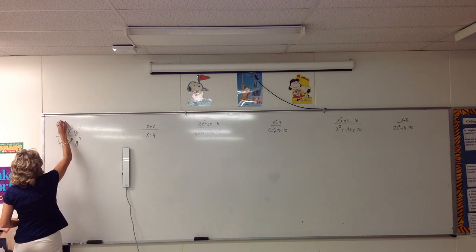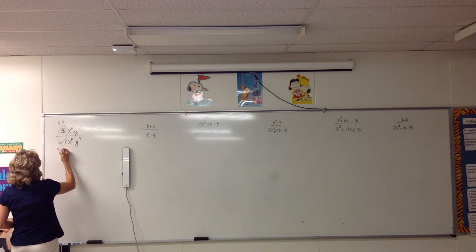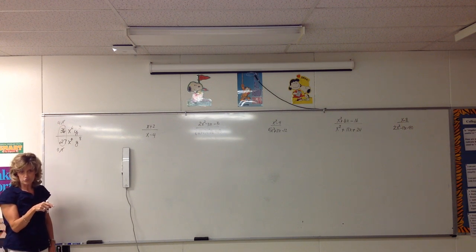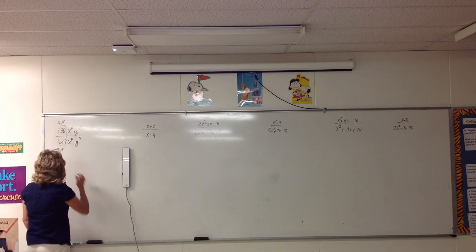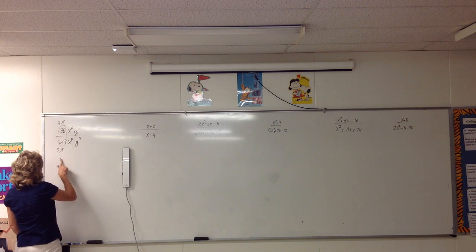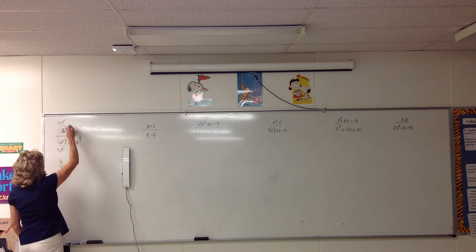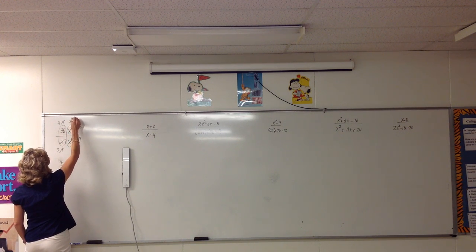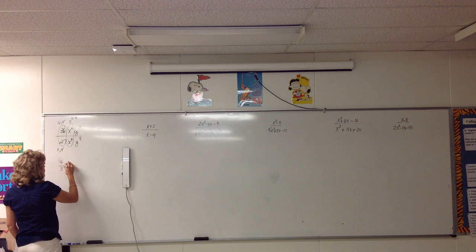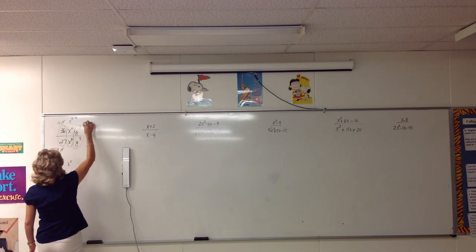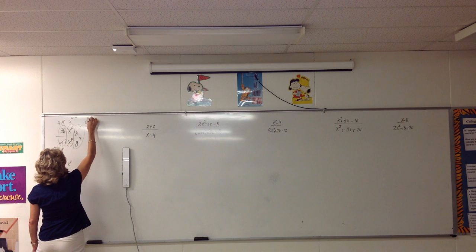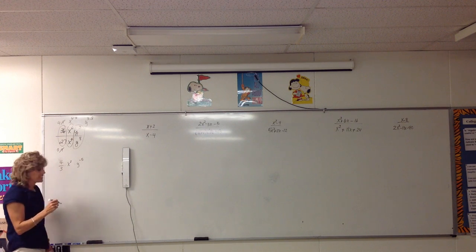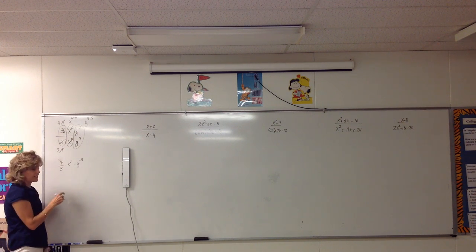36 we can think of as 4 times 9. 27 we can think of as 3 times 9. Then we can cancel the 9s because we can cancel factors. We cannot cancel terms. So I just reduce that fraction and it turns into 4 thirds. Then I recognize, hey, the bases are the same, so I'm going to keep the base and think x to the 6 minus 4, or x squared. And I'm going to think of this as y to the 3 minus 8. So that makes it y to the negative 5. And the last thing is, don't leave negative exponents.